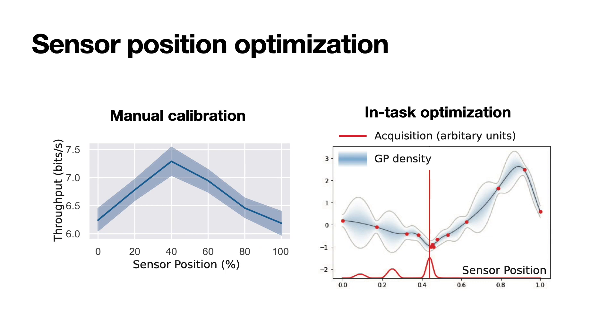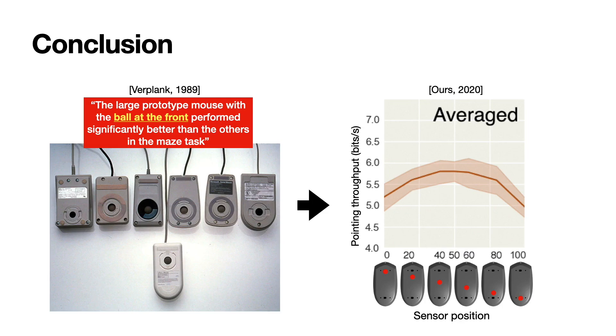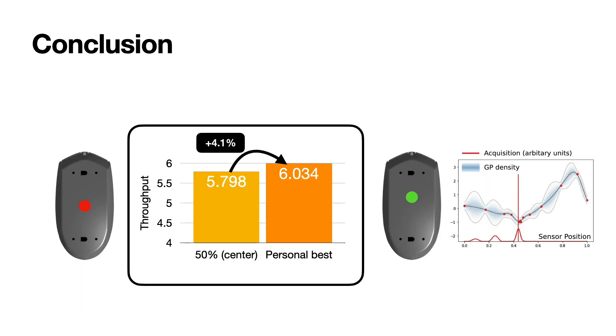We examined optimization method with one user, and the manual calibration and the Bayesian optimization give the same result. To conclude, the old verdict from 1989 is not true anymore. The center position is generally better, and personalization makes it even better.